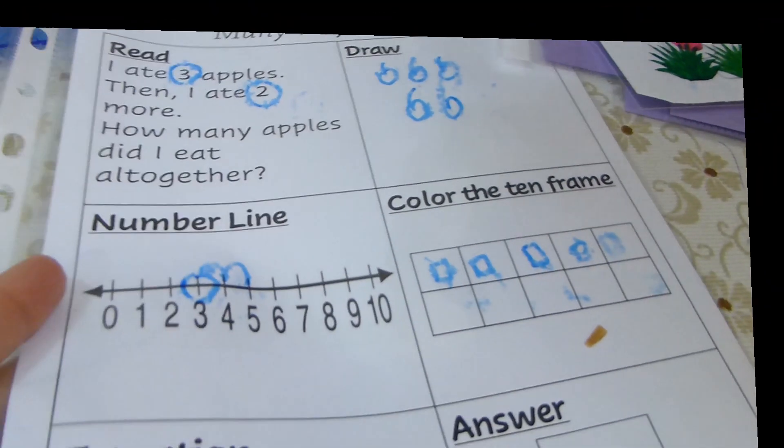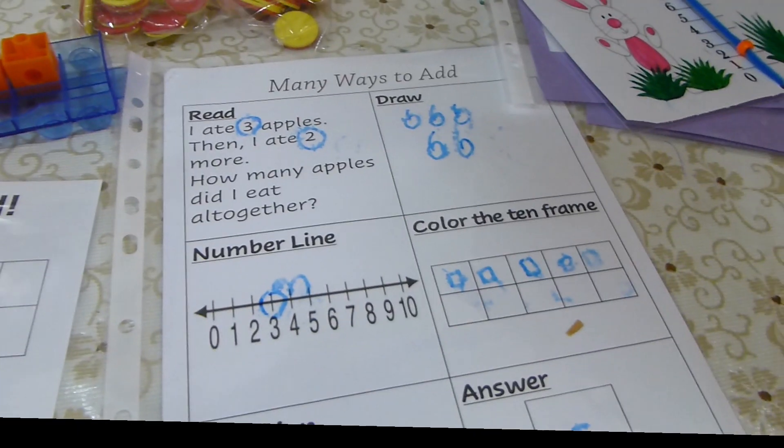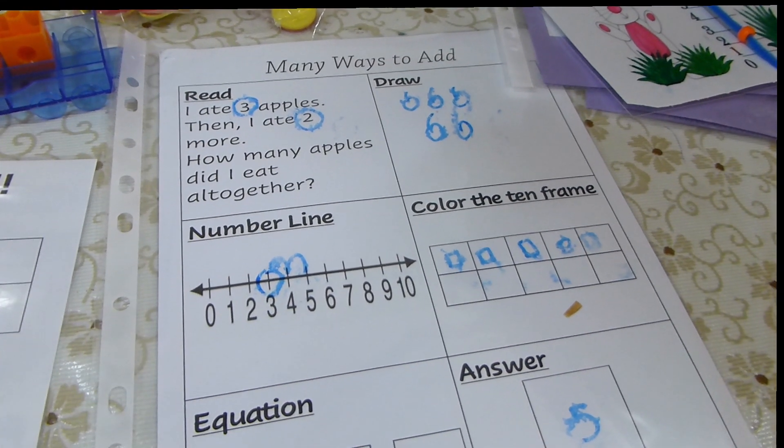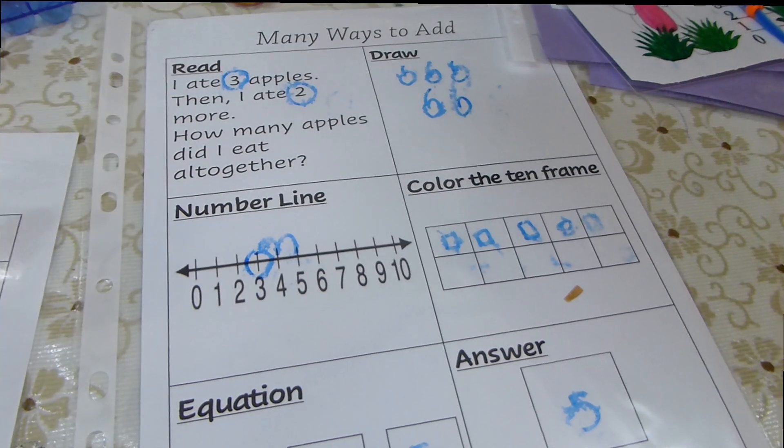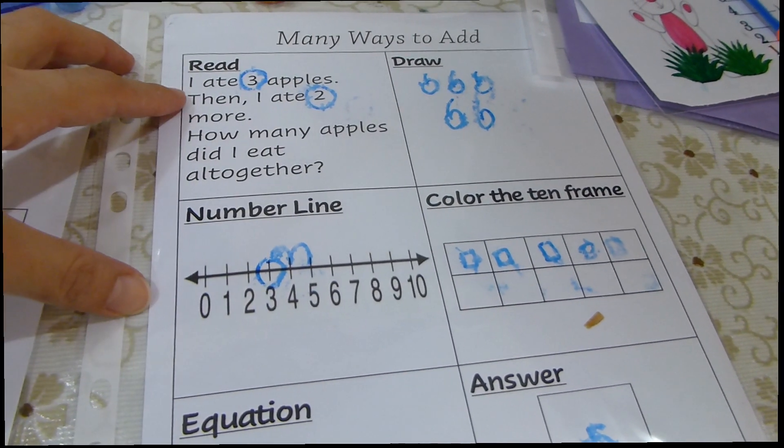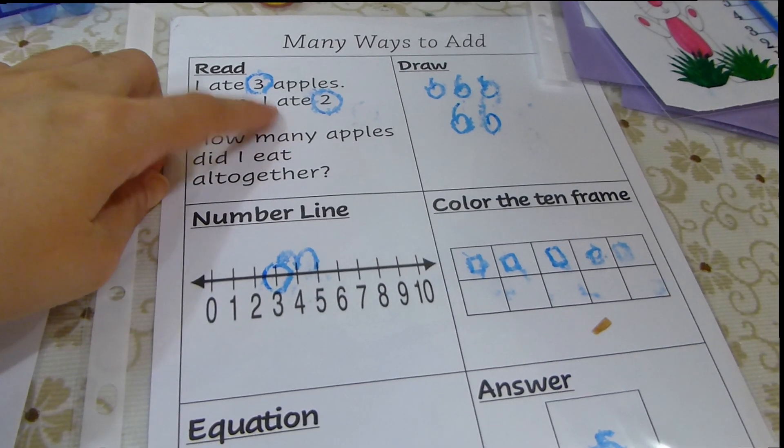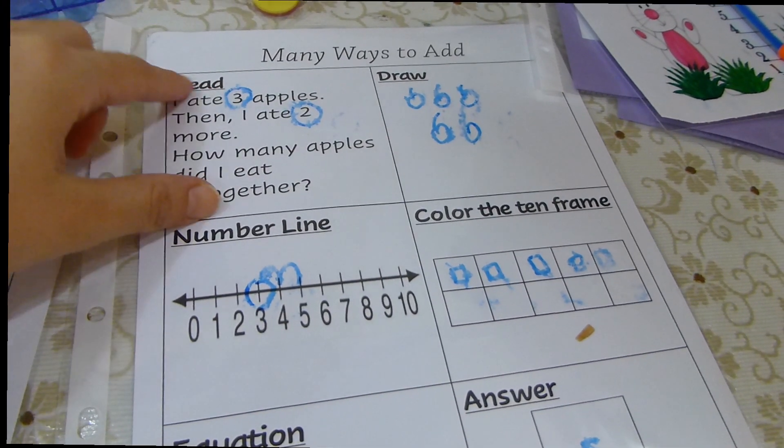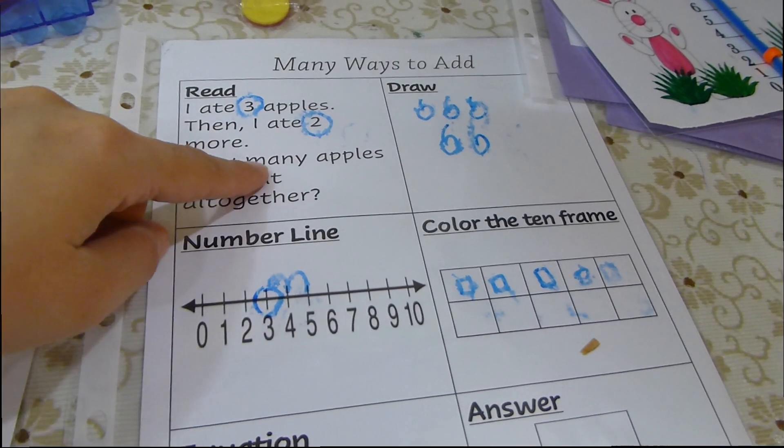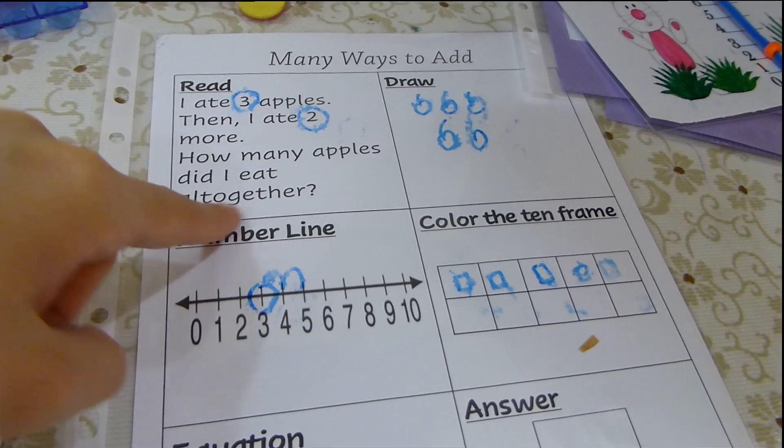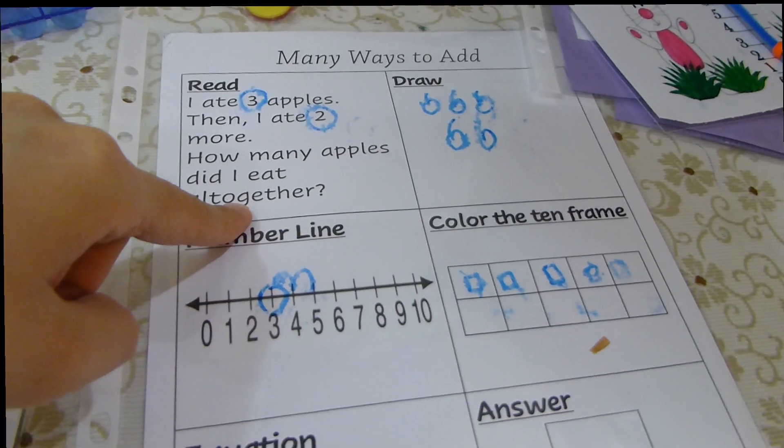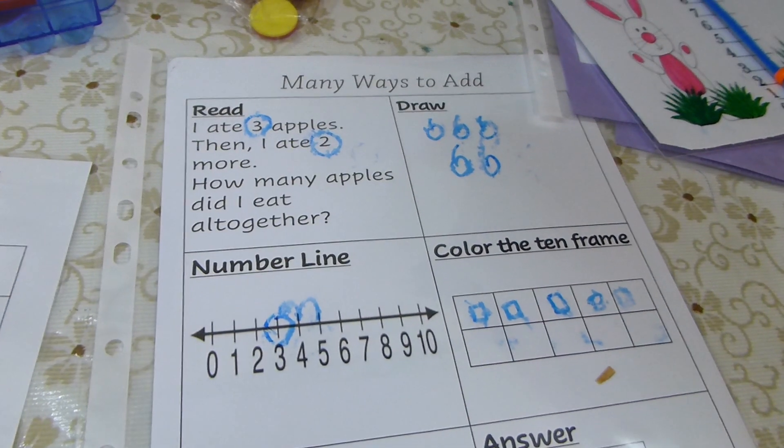The last one that I'll be sharing with you today is this. It's not a game, it's like a summary of all the strategies that we have been trying to do. It's an example about a word problem. What I usually do is I read the word problem. I ate 3 apples. He will circle number 3. Then I ate 2 more. He will circle number 2. How many apples did I eat altogether? Because there is a word altogether, this means addition.